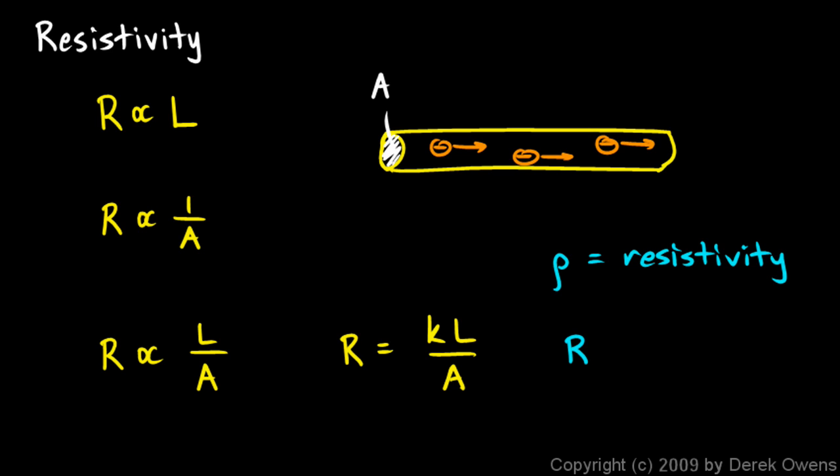As we said at the beginning, the resistance depends on the physical characteristics of the wire. The resistance you get for a piece of wire depends on how long it is (L), the cross-sectional area (A), and the material, which has a certain resistivity (ρ).